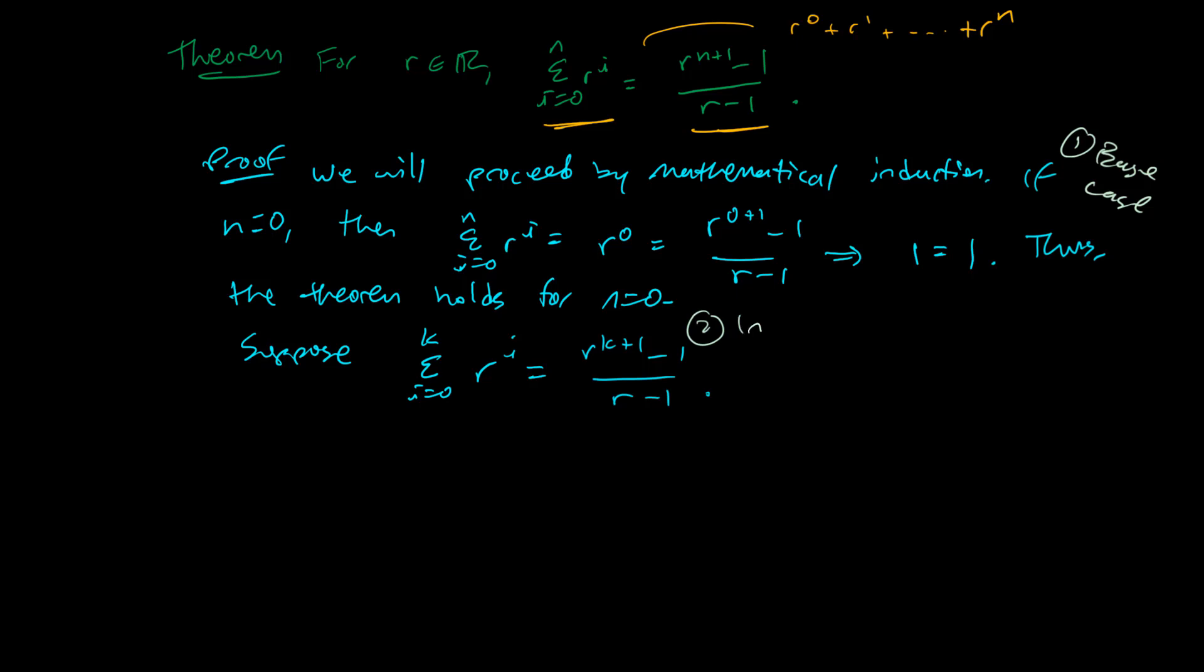And the way induction works is we say that if the first instance is true, and if the kth instance implies the k plus 1th instance is true, if those two things happen, then it's true for all cases. And the picture you have to have in your mind is the first instance is true. That means the first domino is knocked over. And then after that, if the kth domino falls, the k plus 1th one will fall as well. If you can show those two things, then we know that they all fall down.